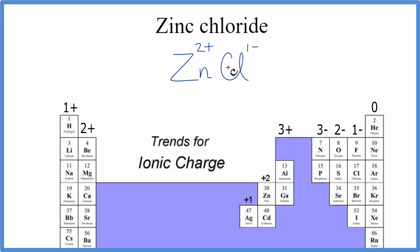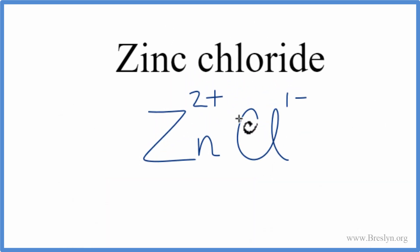So these need to add up to zero for the neutral molecule zinc chloride. Right now they don't. We can change the subscripts though to make that happen, and there's an easy way to do that. We call it the criss-cross method.